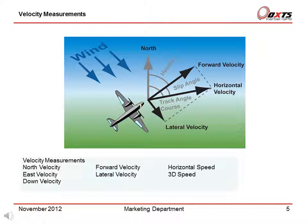This is the same effect as slip angle in cars — the heading of the car is not the same as the angle of the velocity vector. To measure the track angle, you will need to measure the heading minus the tracking angle, which equals the slip angle. The underlying calculation in the RT integrates the accelerations to give north, east and down velocities.